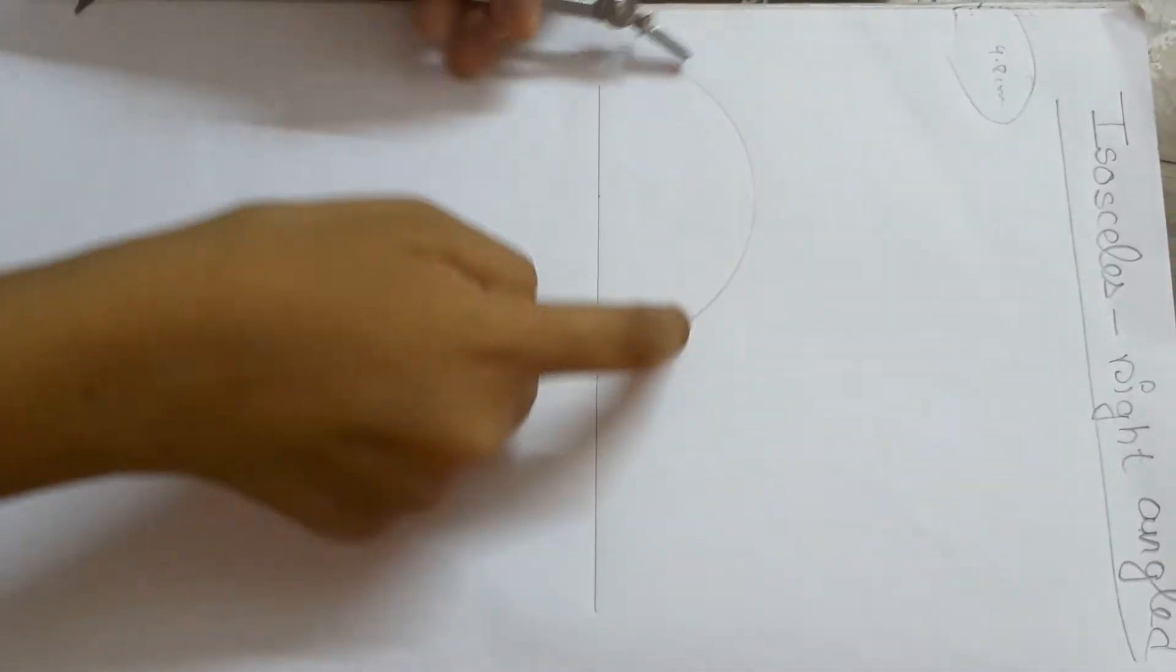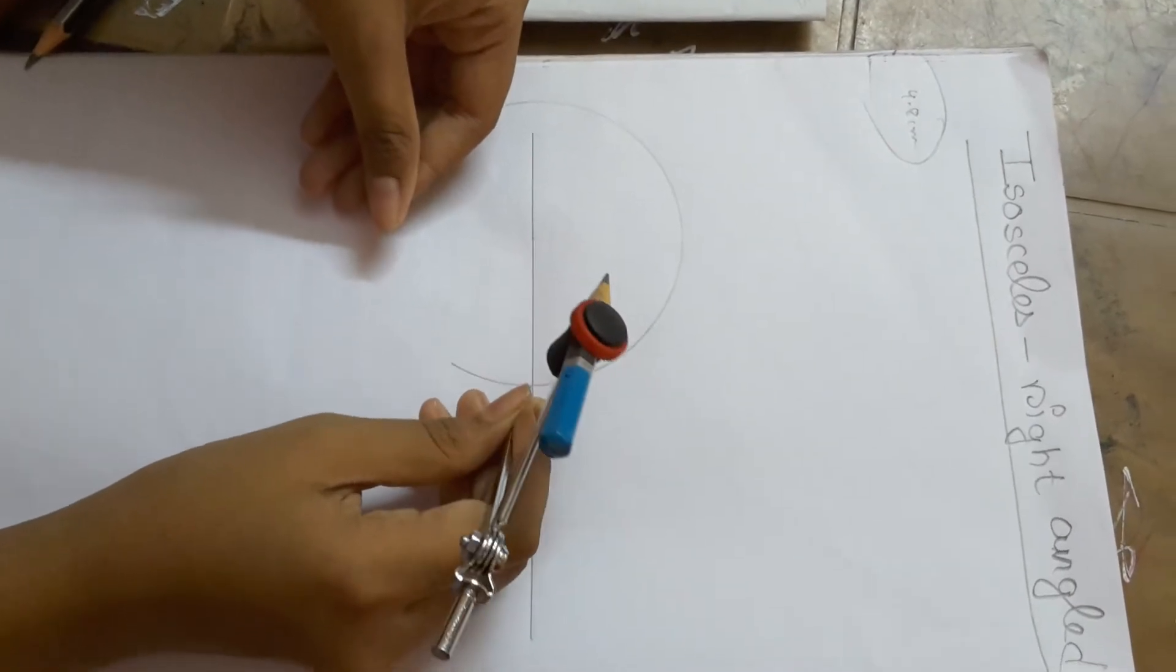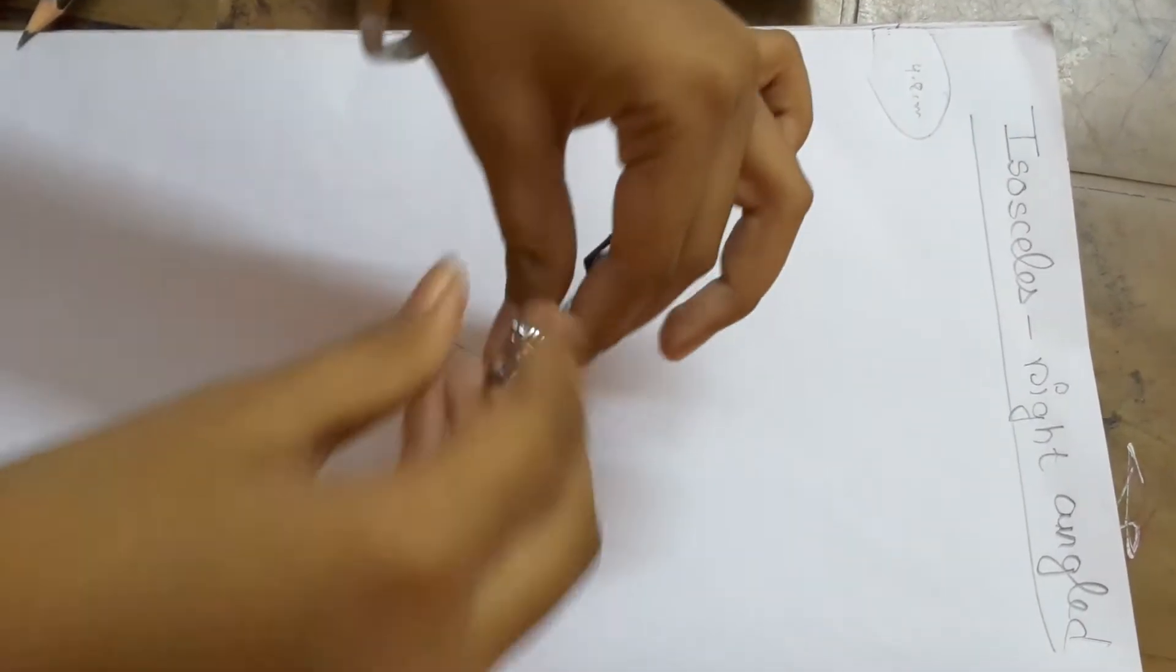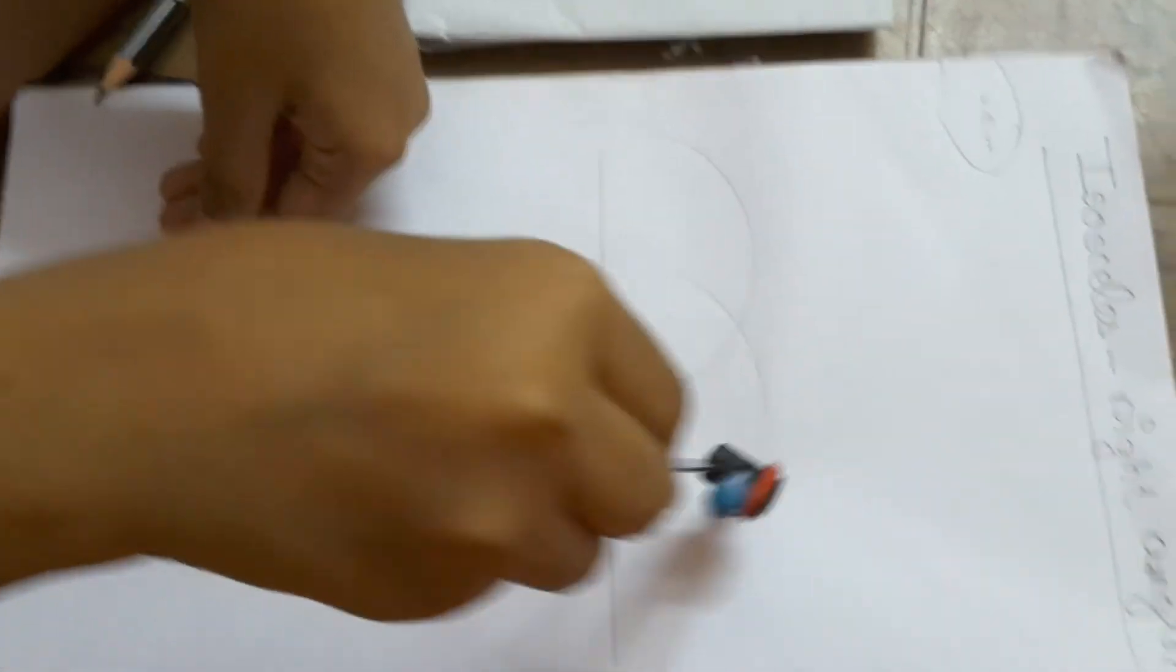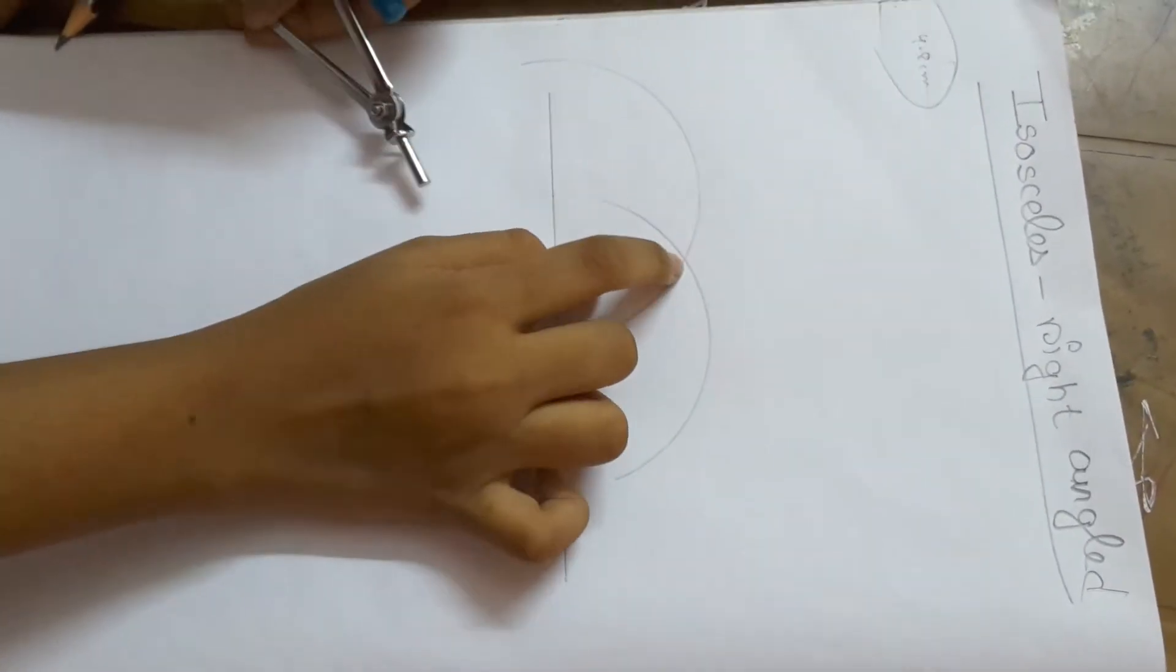It has cut the line here. So you put the compass right over in the point and again make an arc. It has cut the arc here.